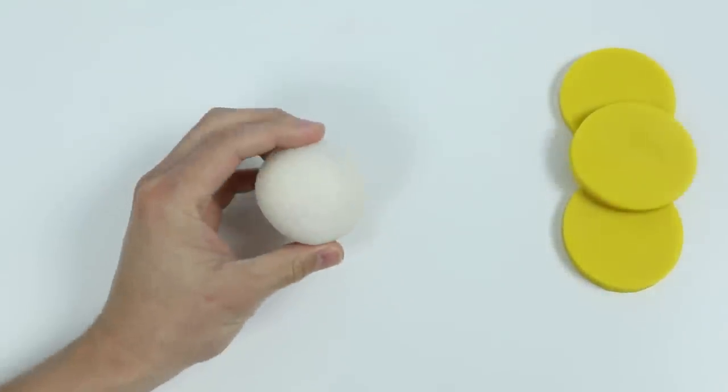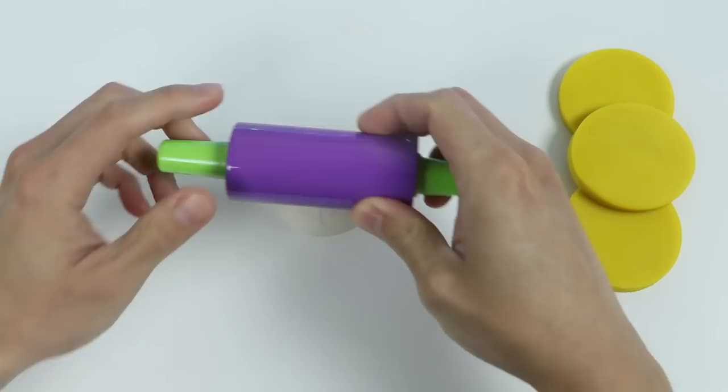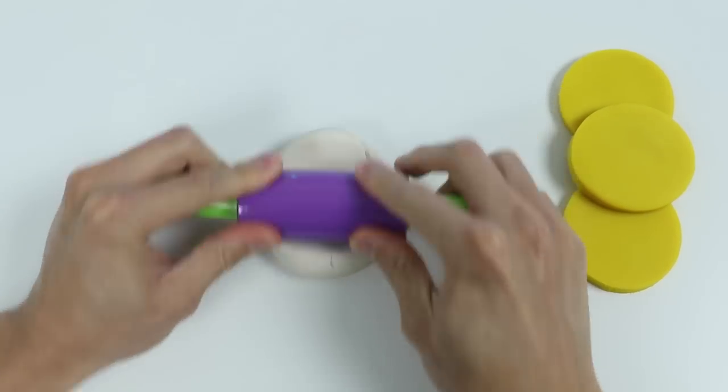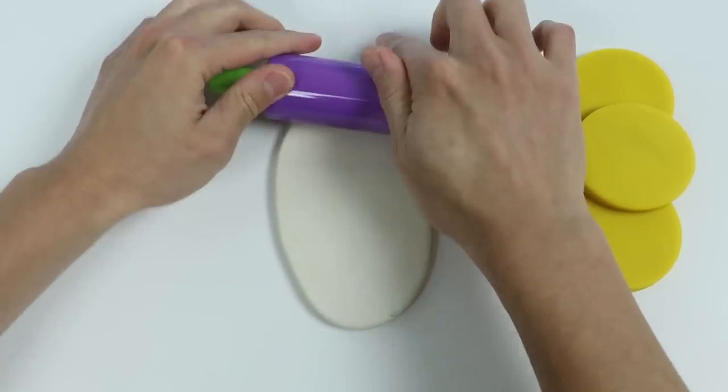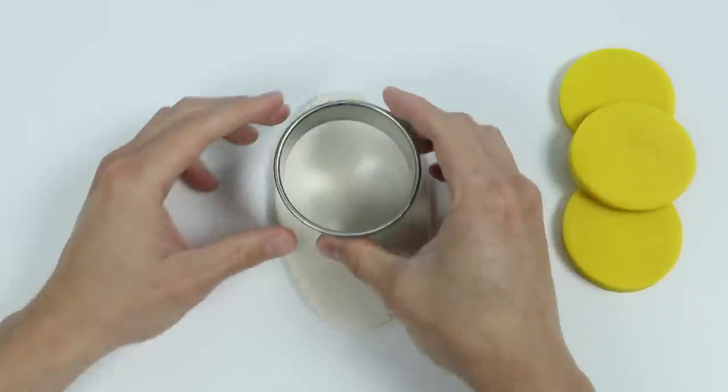Okay, now let's roll out this white Play-Doh. Use the circle cutter again.